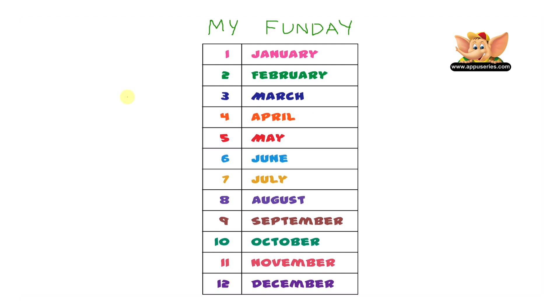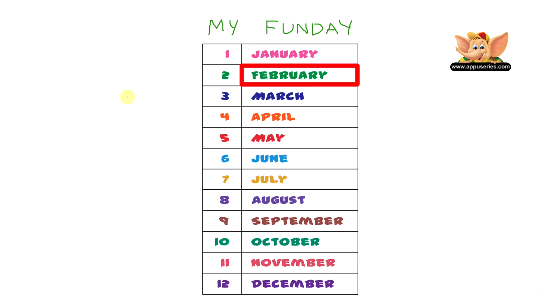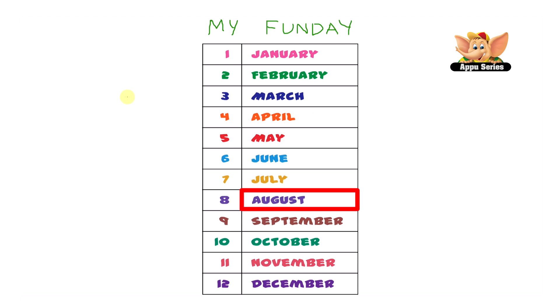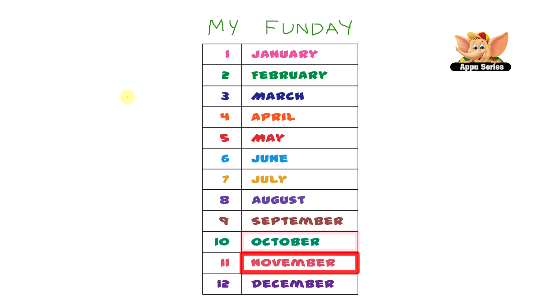Now let's move on to the months of the year. Let's look at this chart and see the order of the months. We have the first month, January, then February, March, April, May, June, July, August, September, October, November, and December.